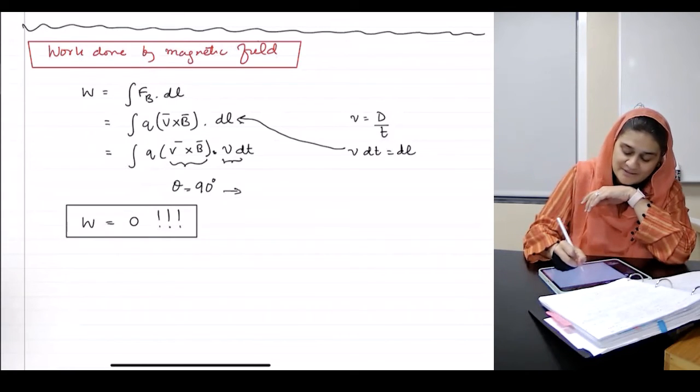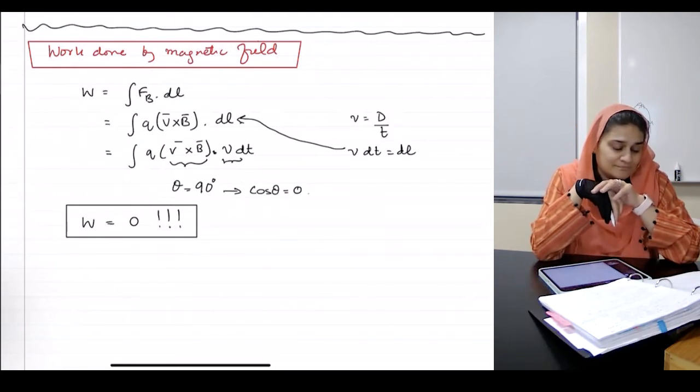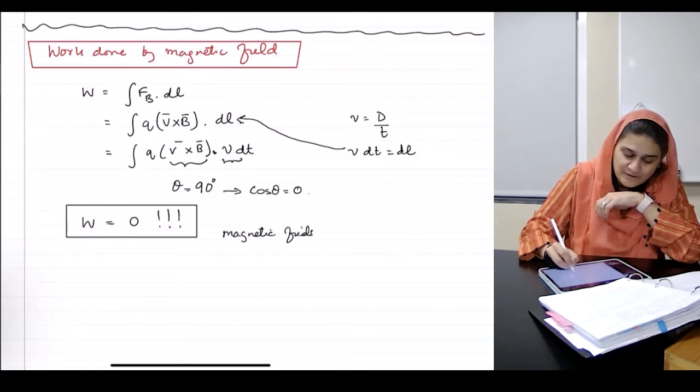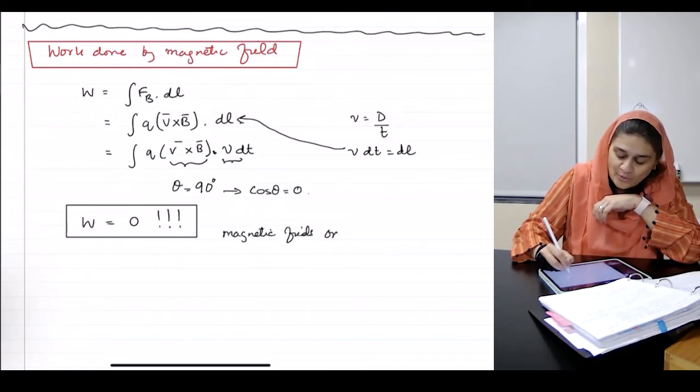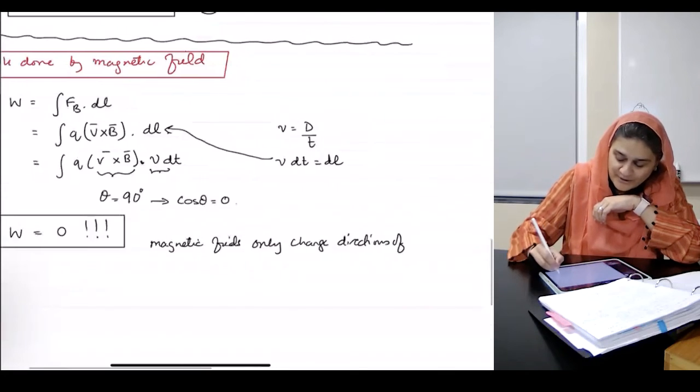Right? Because cosine of theta will be zero. Basically, magnetic fields only change directions of particles.